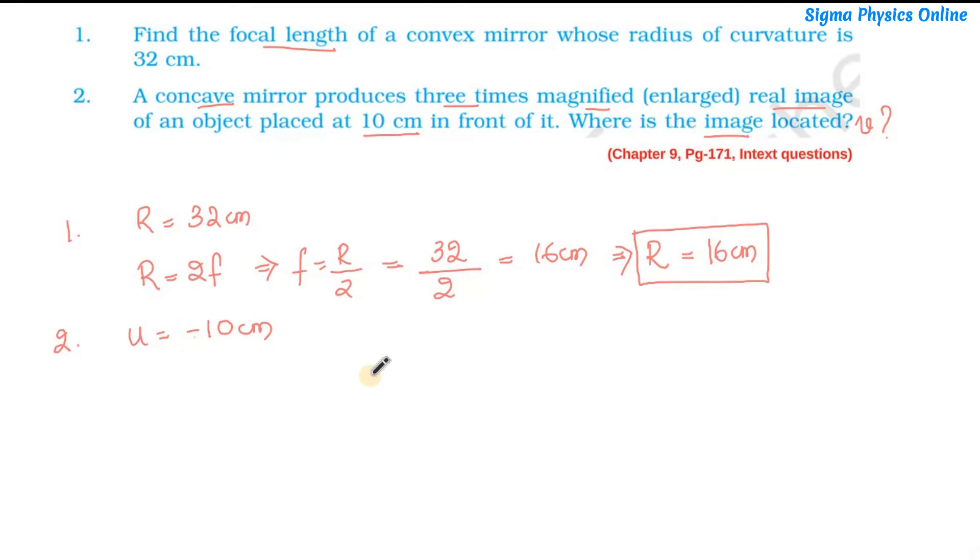I have made a detailed video on sign convention. I'll place the link in the description box. Please watch it to have clarity on the signs to be used while solving these types of questions. So now we have U equals minus 10 cm.